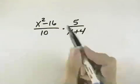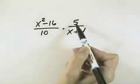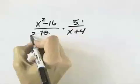Before we multiply, it's helpful to simplify by canceling like factors out of the numerator and denominator. For instance, we have a common factor of 5 that we can cancel, leaves a 1 in this numerator and a 2 in this denominator.